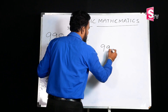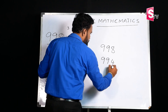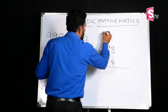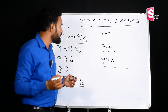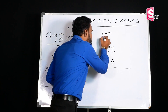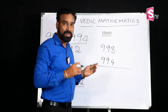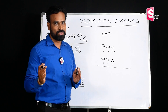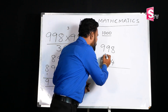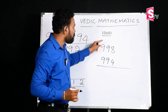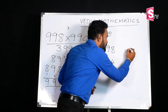The two numbers are 998 and 994. These two numbers are close to 1,000. We will use the base of 1,000. What is the base number? How much is it from the base?